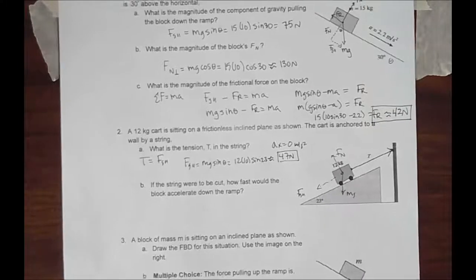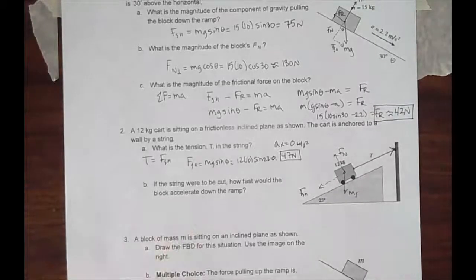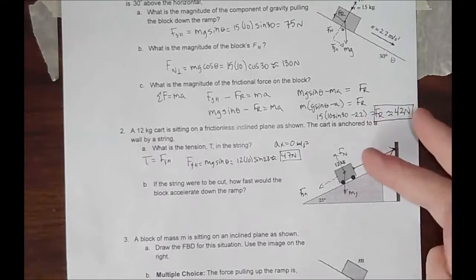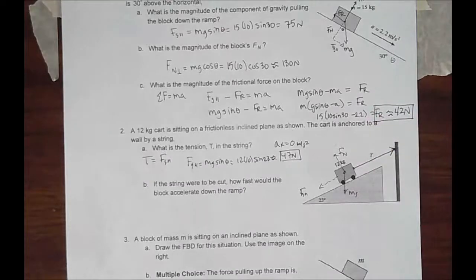If the string were to be cut, in part B, if I were to take my magical scissors and cut this, how fast would the system accelerate down the ramp?